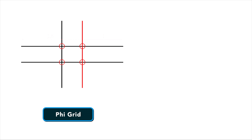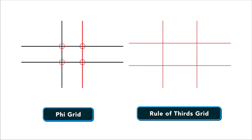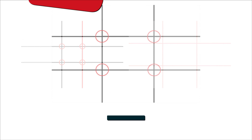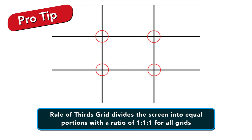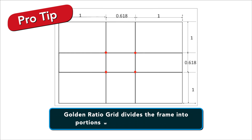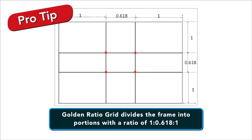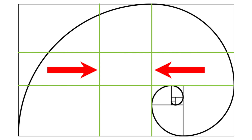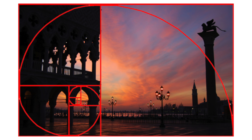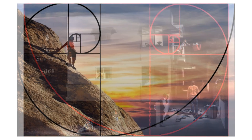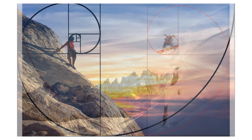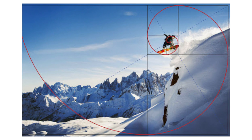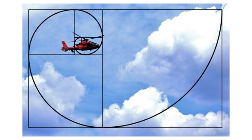The Phi Grid looks very similar to the Rule of Thirds principle, yet it has one very important difference. Instead of dividing the frame into equal thirds of 1 to 1 to 1 like the Rule of Thirds does, the Golden Ratio divides the frame into sections resulting in a grid that is 1 to 0.618 to 1. This results in a set of intersecting lines that are much closer to the middle of the frame. There are no right or wrong versions of the Golden Ratio as a design principle — each is unique and can be applied as such.